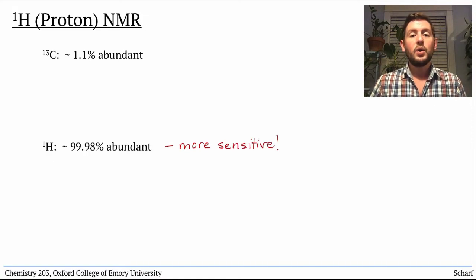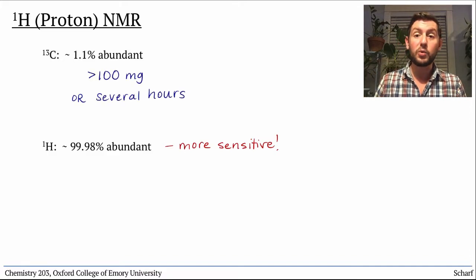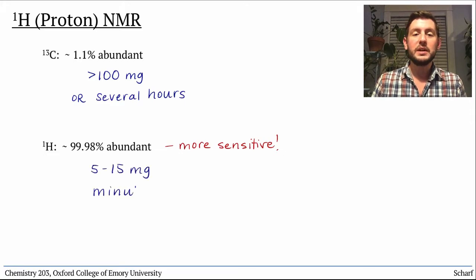While it takes either hundreds of milligrams of sample or several hours to acquire a good C-13 spectrum, a high quality proton spectrum can usually be obtained with 5-10 milligrams of a sample in a few minutes.